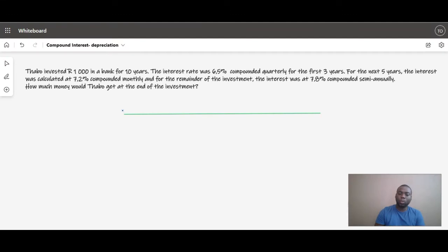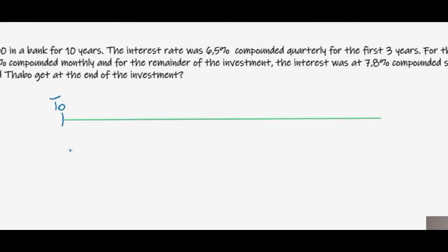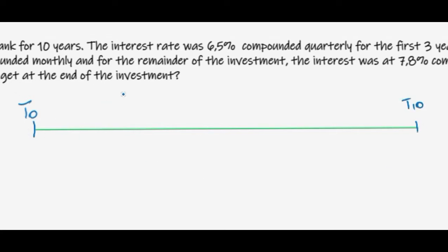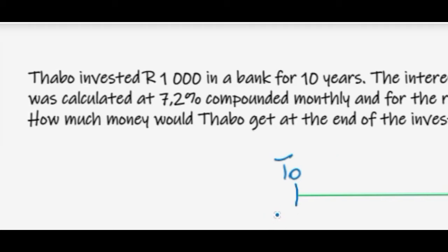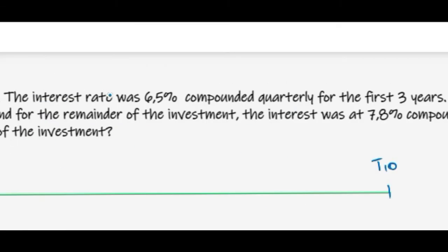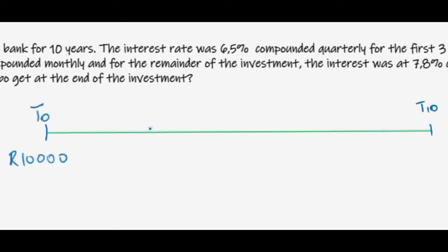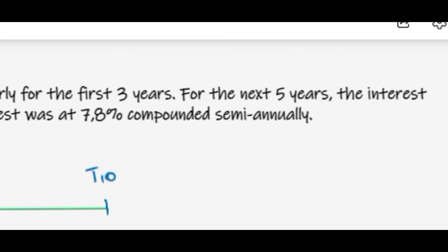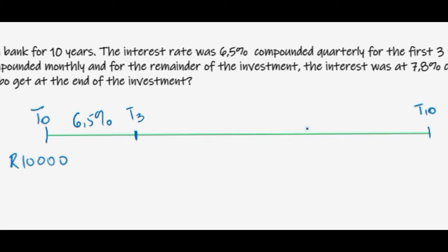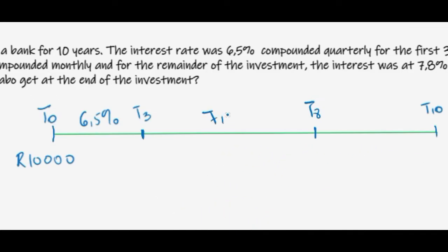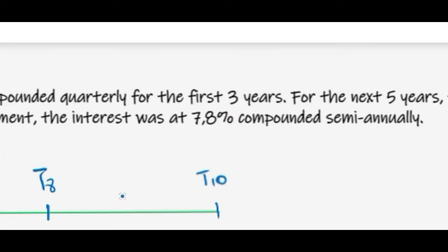At the beginning of any investment we say that represents t0, and at the end it is how long it runs, so since this is 10 years we have t10. The question tells us 1,000 rand was invested at the beginning, so we write 1,000 rand at t0. The interest rate is 6.5% for the first three years, up to t3. For the next five years, from t3 to t8, the interest rate was 7.2%.